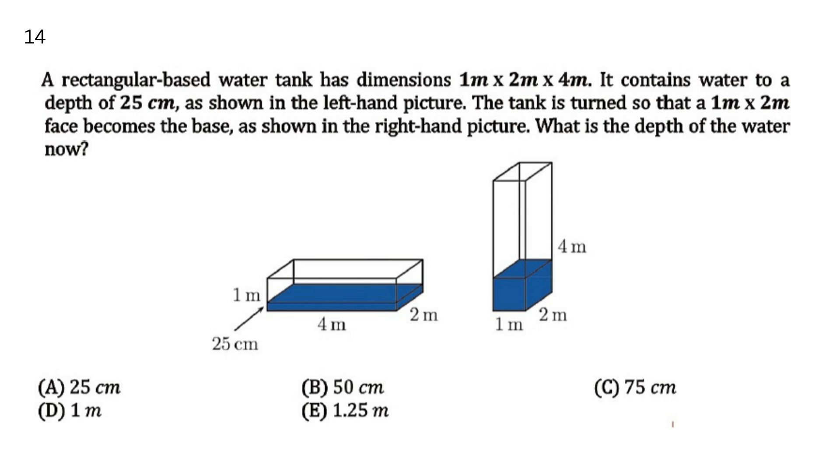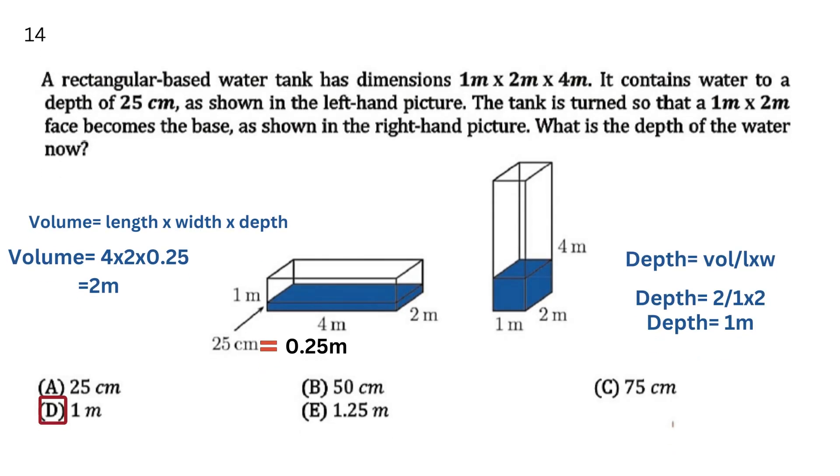A rectangular-based water tank has dimensions 1m x 2m x 4m. It contains water to a depth of 25 cm as shown in the left-hand picture. The tank is turned so that a 1m x 2m face becomes the base as shown in the right-hand picture. What is the depth of the water now? जब इस tank को tilt किया जाता है और turn करके खड़ा किया जाता है, तो 1 x 2m इसका base बन जाता है. So अब, water की depth क्या होगी?